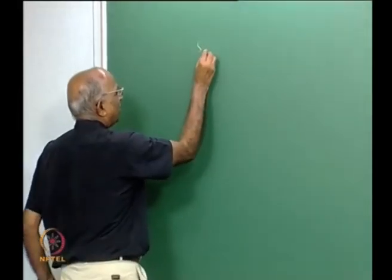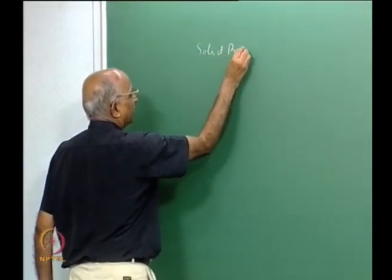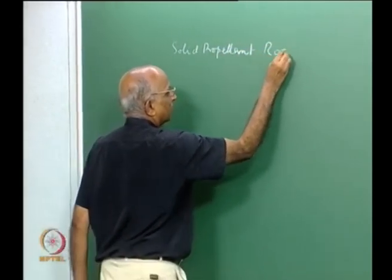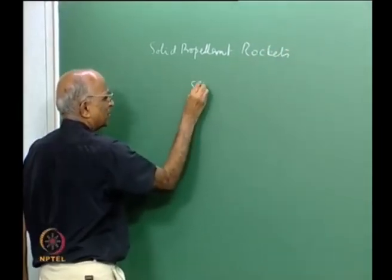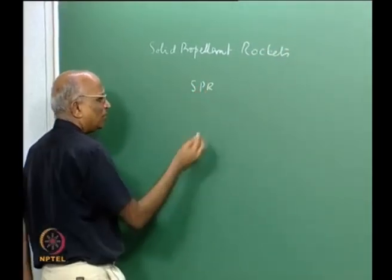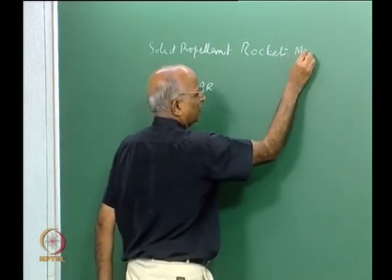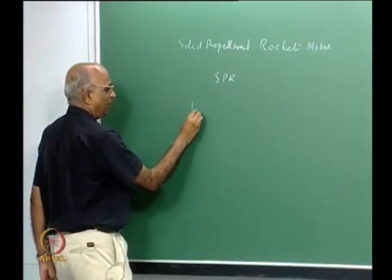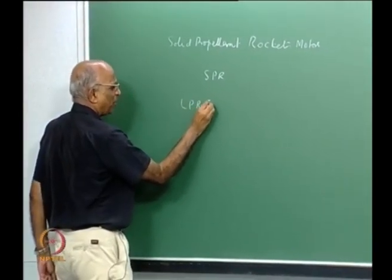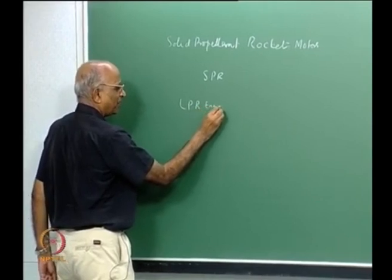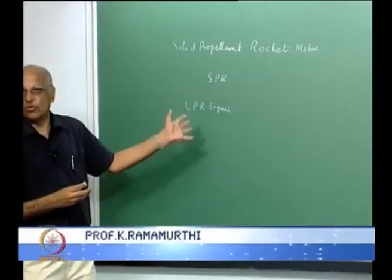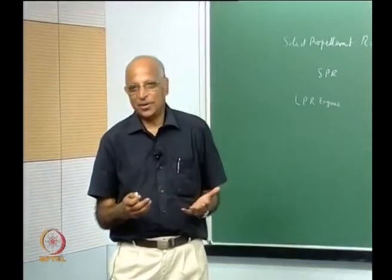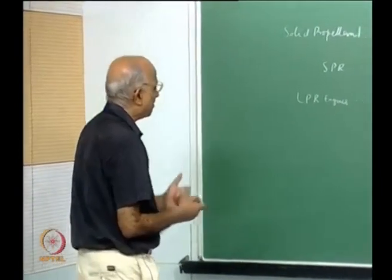Solid propellant rockets, known as SPR, are also known as solid propellant rocket motors. Whereas liquid propellant rockets are known as liquid propellant rocket engines. In many textbooks, solid propellant rockets are referred to as motors whereas liquid propellant rockets are referred to as engines. What would be the reason for this?